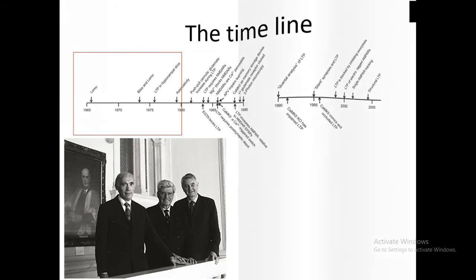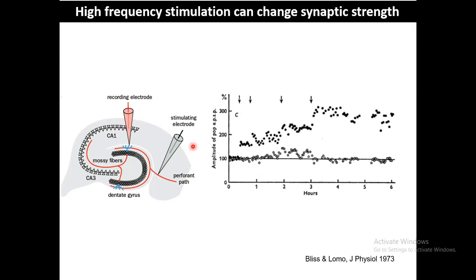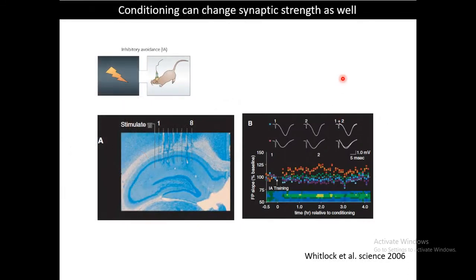This idea was first explored in the 1960s to 1970s by Bliss and Lømo. They used rabbit hippocampal slices, stimulating the perforant pathway coming from the entorhinal cortex and recording from the granule cells of the dentate gyrus. After high-frequency stimulation they observed that synaptic strength was increased, because there were boosted EPSP slopes suggesting synaptic strength had changed and increased.